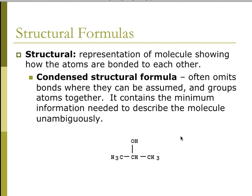There's also a condensed structural formula. This omits some of the bonds that are understood, that can be assumed, and it groups atoms together. It contains the minimum information to describe the molecule unambiguously. You do have to highlight functional groups, and here this would be a condensed structural formula.